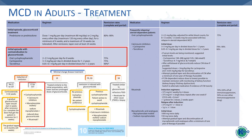Regarding alternatives to corticosteroids for induction of remission when corticosteroids are contraindicated: oral cyclophosphamide can be used at 2 to 2.5 mg per kg per day for 8 weeks; cyclosporine at 3 to 5 mg per kg per day in 2 divided doses for 1 to 2 years.